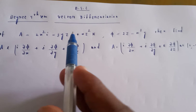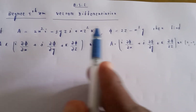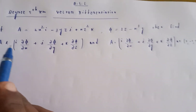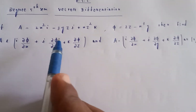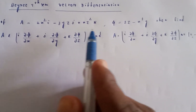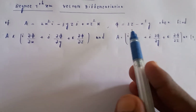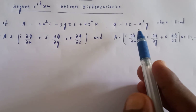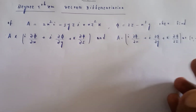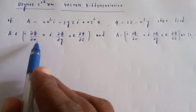Welcome to my channel. BSc degree fifth semester vector differentiation. If A is equal to 2x² i minus 3yz j plus xz² k, and phi is equal to 2z minus x³y, then find A cross (i into ∂φ/∂x plus j into ∂φ/∂y plus k into ∂φ/∂z).